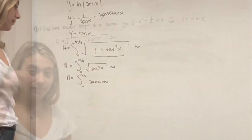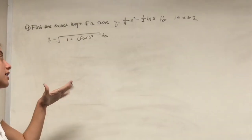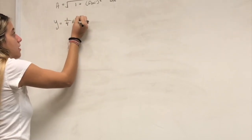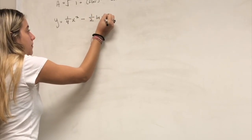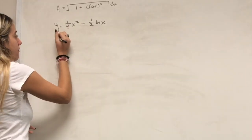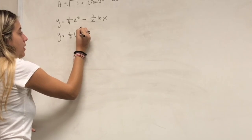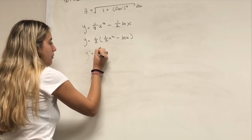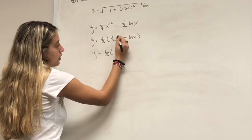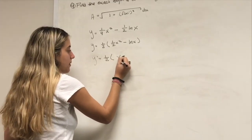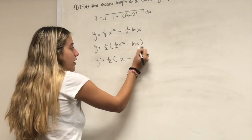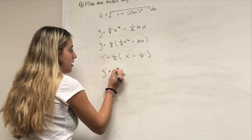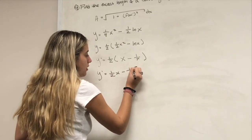The integral of sec x dx is the answer for question 3. For question 4, find the derivative of y = (1/4)x² − (1/2)ln x. Factor out 1/2: y = (1/2)[(1/2)x² − ln x]. Differentiating: the 1/2 and 2 cancel to give x, and the derivative of ln x is 1/x. Distributing the 1/2 gives y' = (1/2)x − 1/(2x).